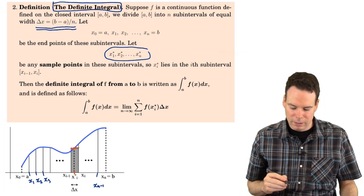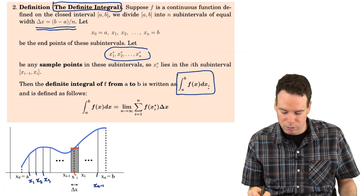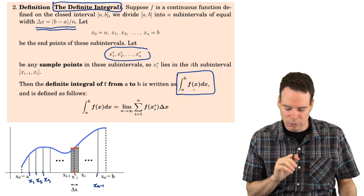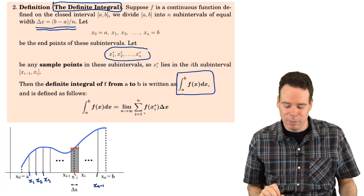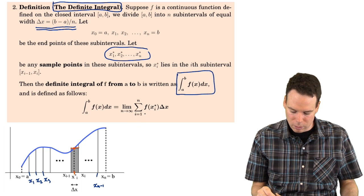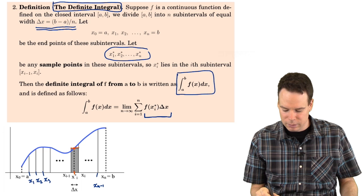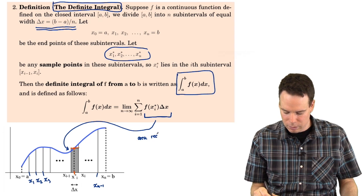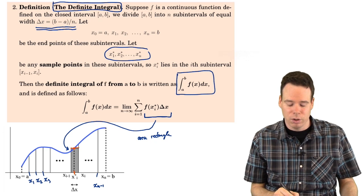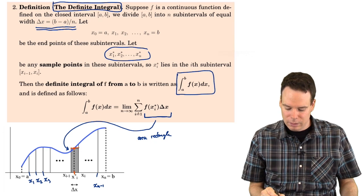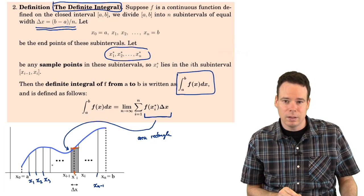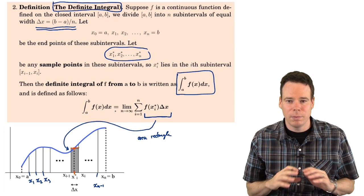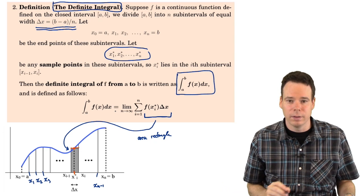With all of those ingredients in place, we now define the definite integral. The symbol is this elongated S from a to b of f, with dx on the end — one symbol representing the integral. We define that symbol to represent the limit of the Riemann sum. That's the definite integral, and it's going to be the main focus of most of this course.